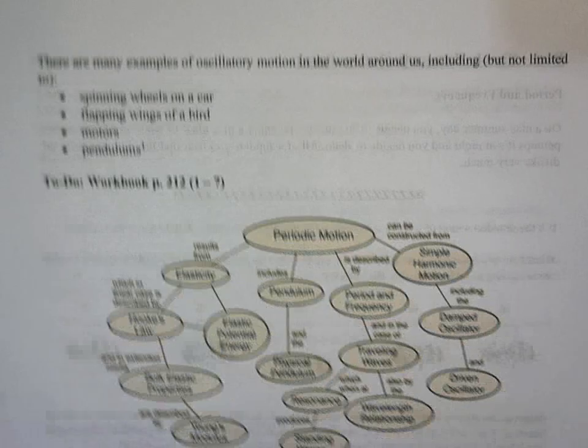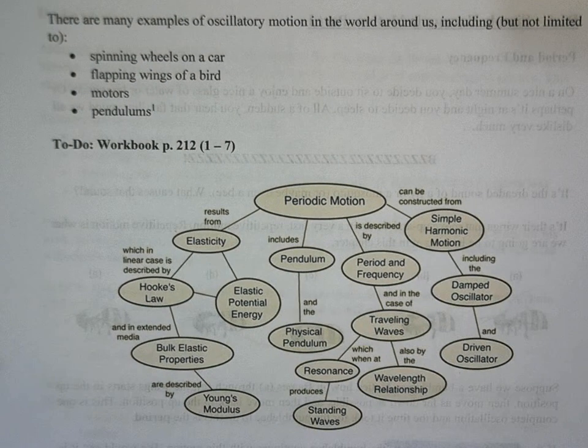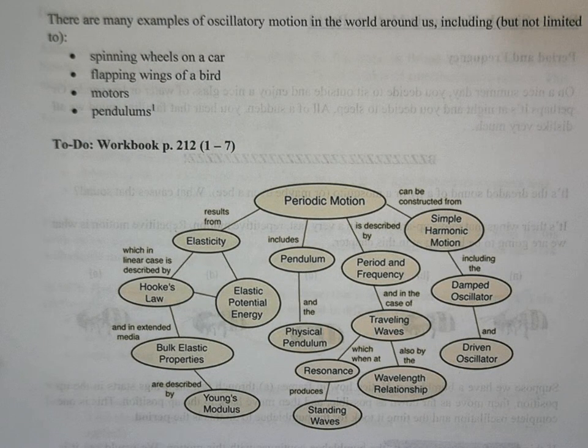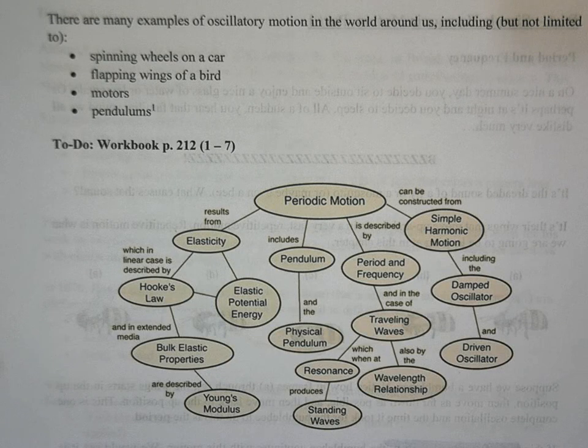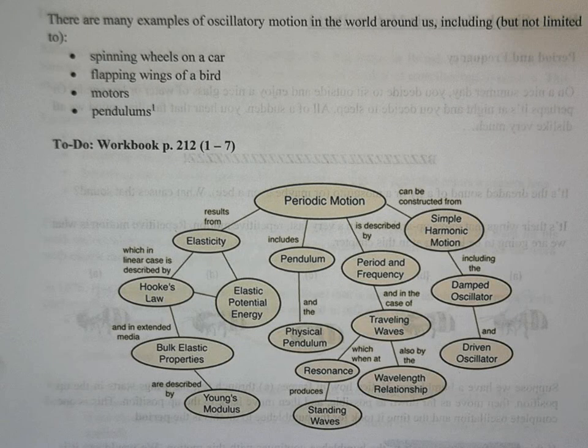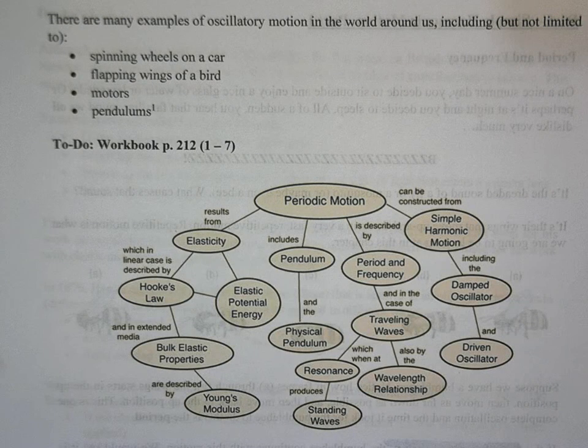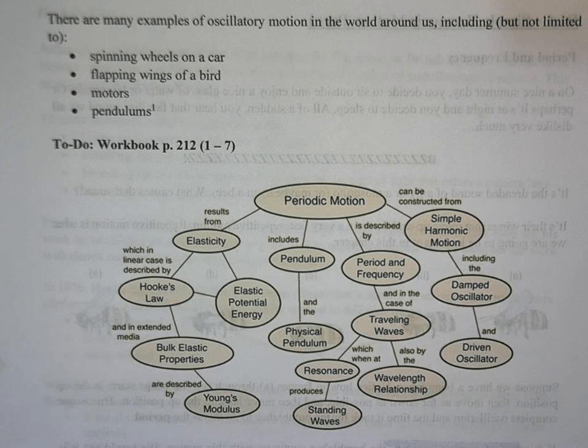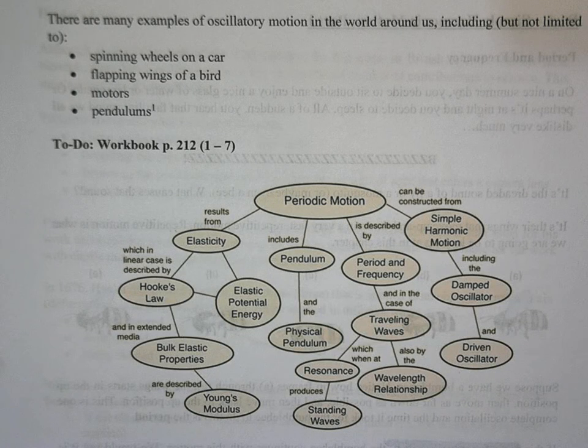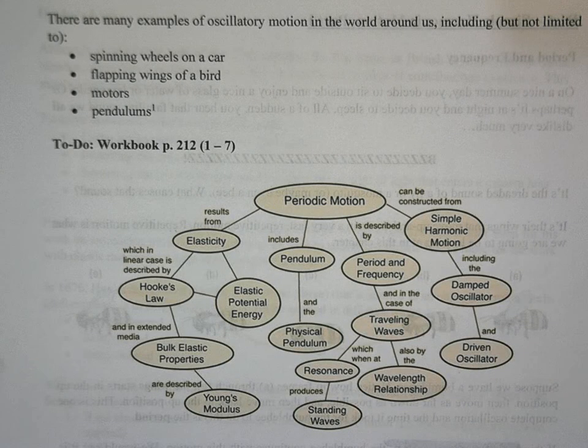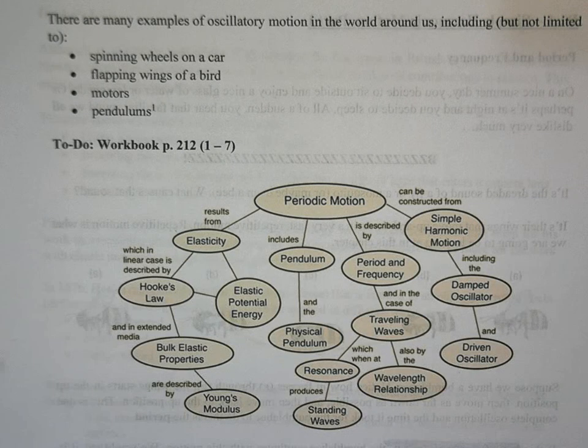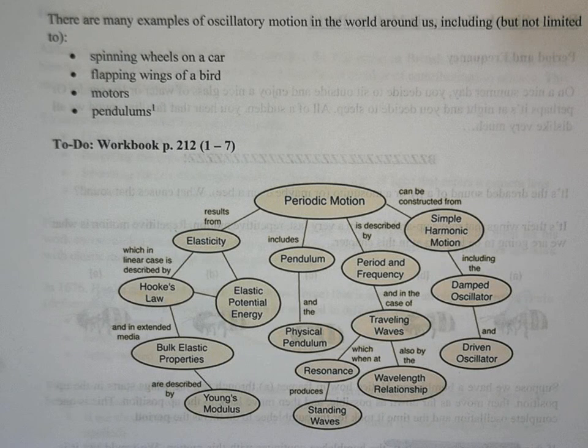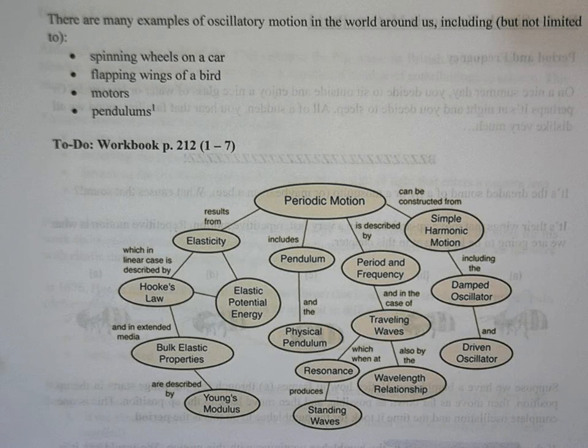So when we look at oscillatory motion, there are actually plenty of examples of oscillatory motion around us. We've already talked about the flapping wings on a bee. You can apply that to birds or any other insects. The spinning wheels on a car, the car tire is going to rotate or like you can have a bike wheel. Those are all examples of oscillatory motion. Motors are an excellent example of oscillatory motion. Even pendulums will work.